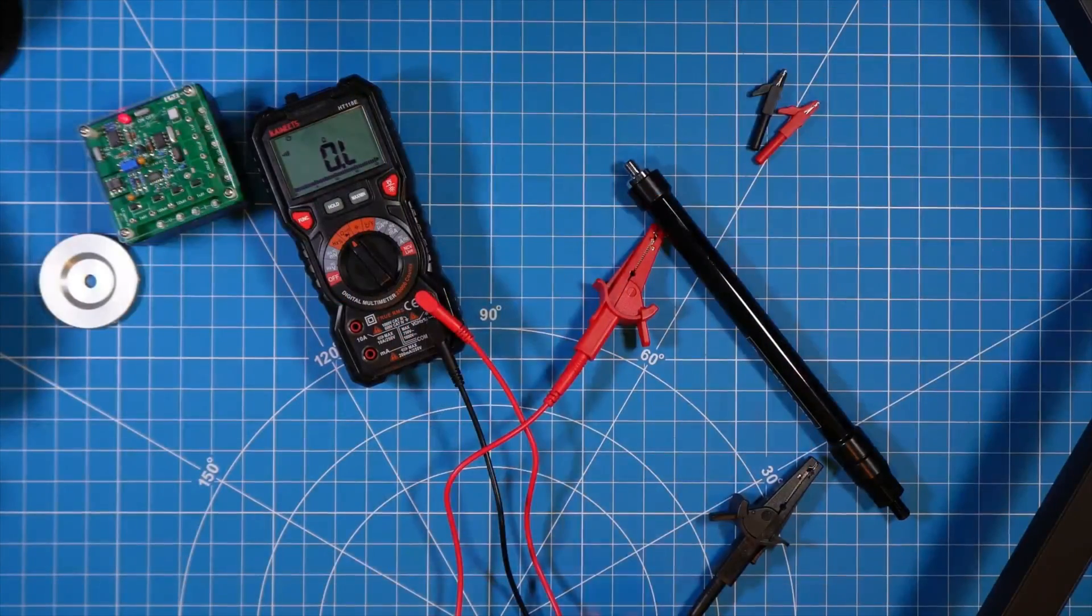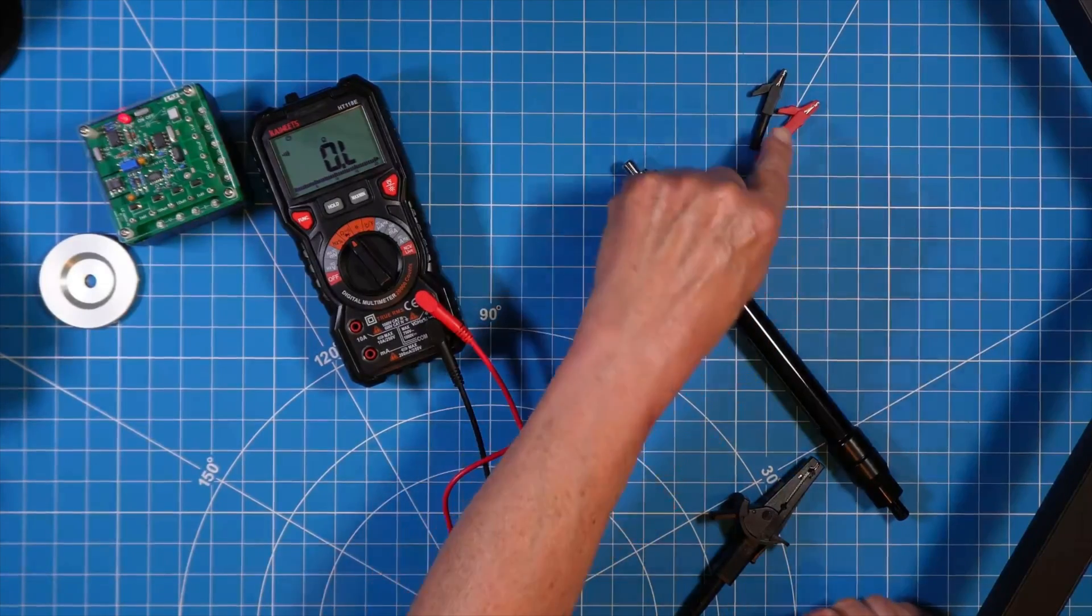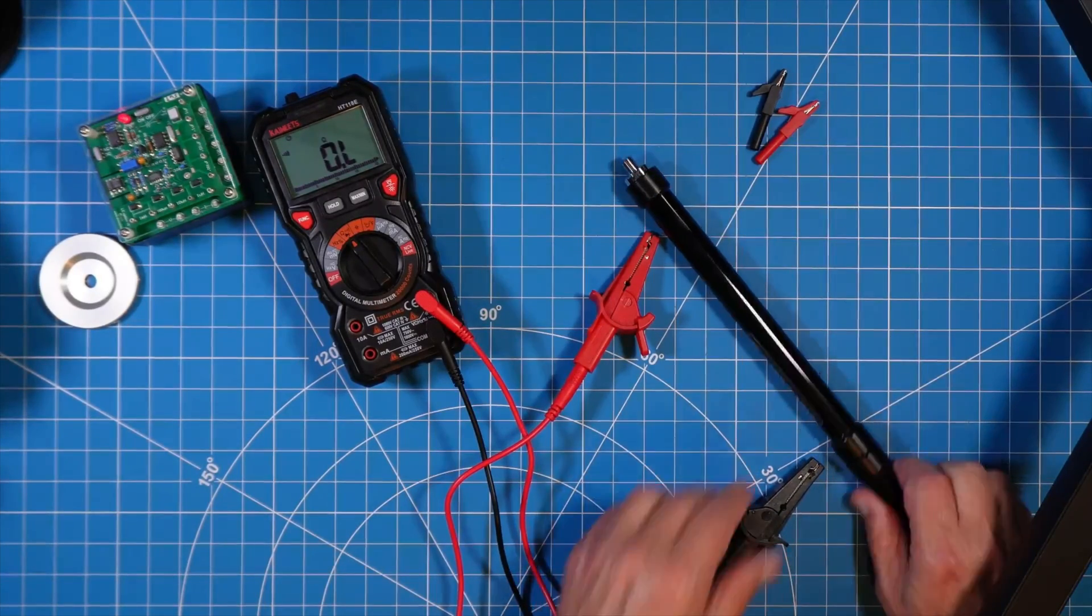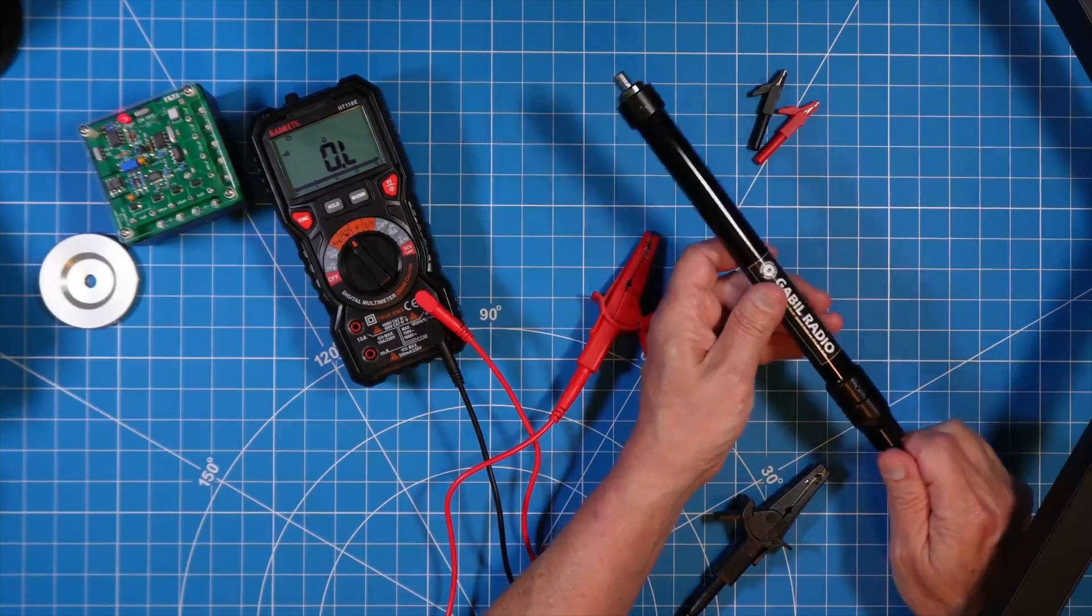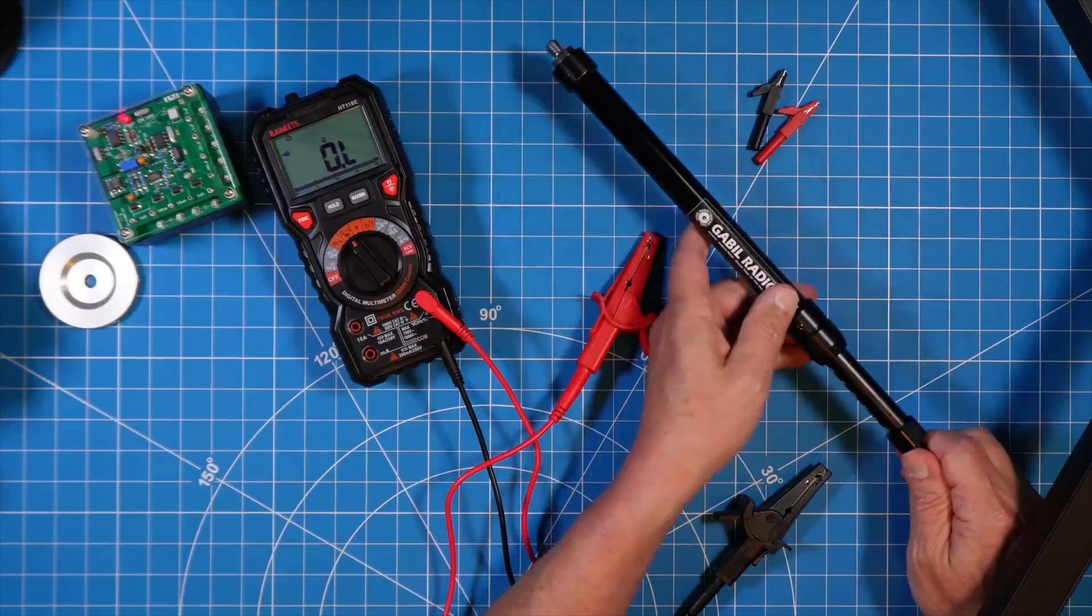Last but not least, we're going to use the alligator clips. They come in two sizes in this kit. This is a broadband HF antenna coil from G Gable radio.